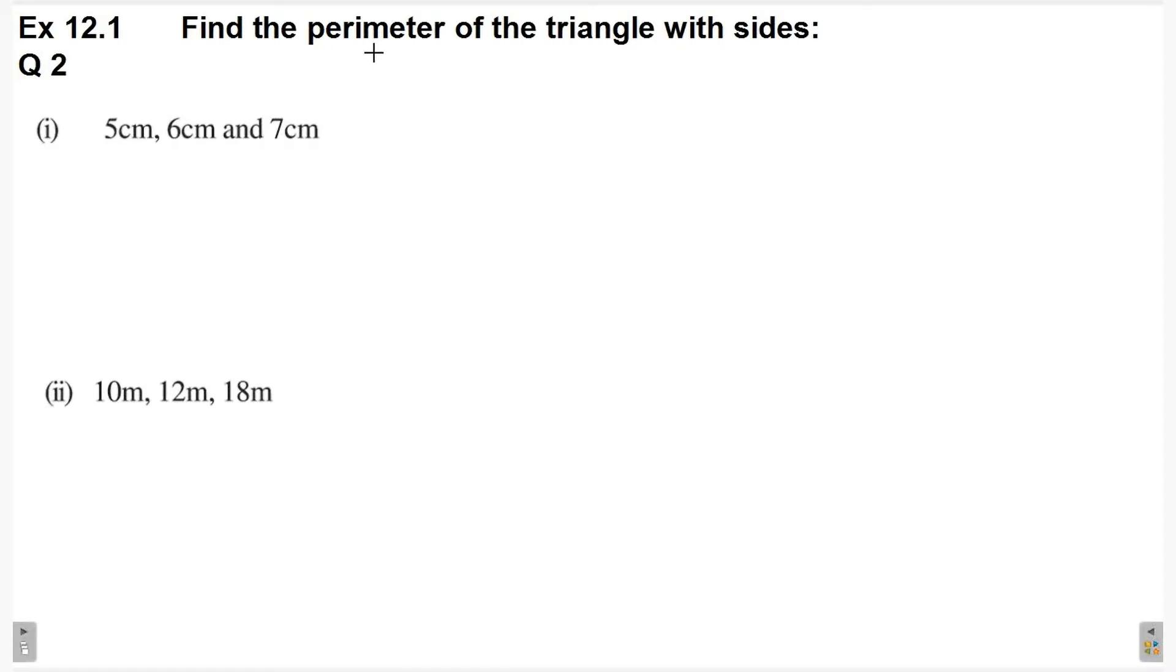Find the perimeter of the triangle with sides. First part, sides given are 5 cm, 6 cm and 7 cm.